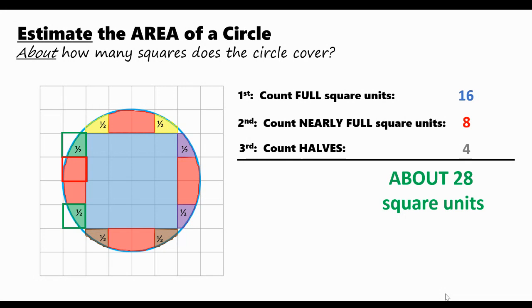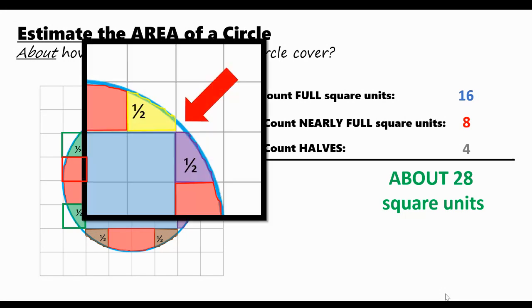Notice I said the word about. Remember, this is an estimate. And I know some of you may have noticed this little area right here. We didn't count these portions of the circle. They are so small. And since we are only trying to find an estimate, a number that's close to the exact area of the circle, you don't need to count these.